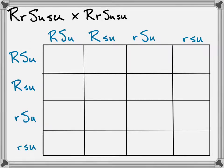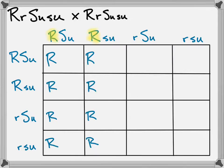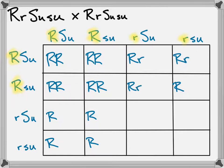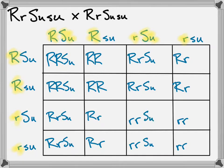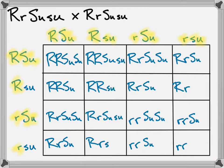I like to take one letter at a time and work down and then work across. I start with all the dominant letters — take the R and fill it down and across, then this R and work across. Now take the little R's and work down, then across. So I've completed the R trait. Now I'm going to fill in the SU trait — starting with the dominant working down, then across with dominant, then down with recessive, and across with recessive. Now I have all my traits filled in.